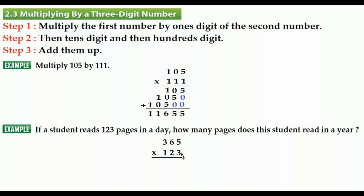First, we multiply the first number by the ones digit of the second number: 3 times 365 gives us 1095. Now we multiply the first number by the tens digit of the second number. The result is 730 — but don't forget to add the extra zero.